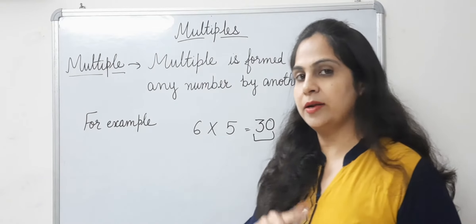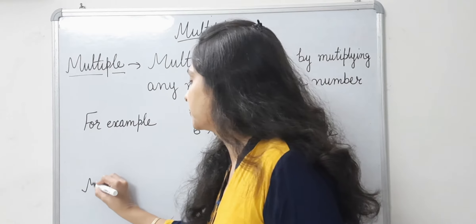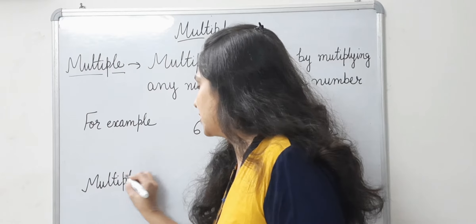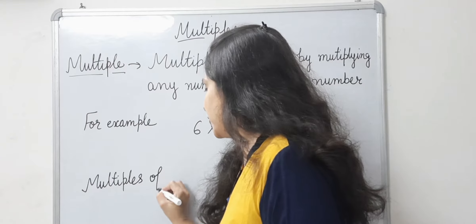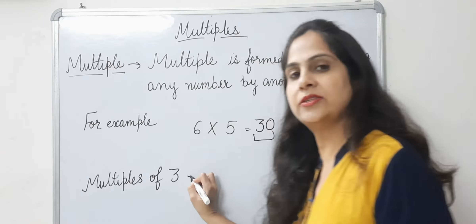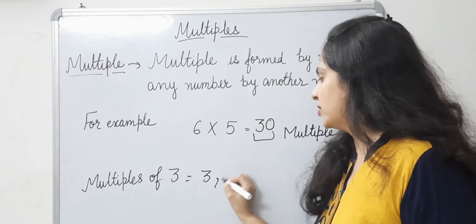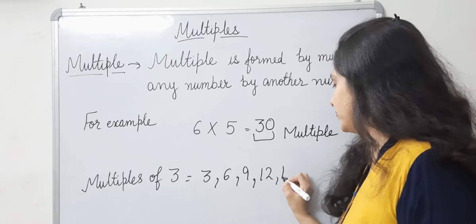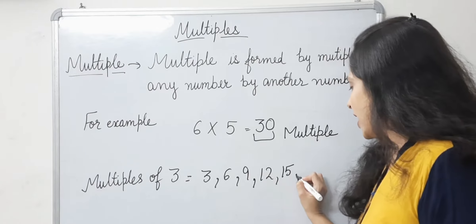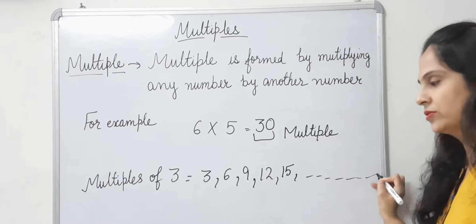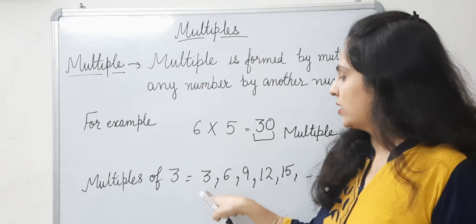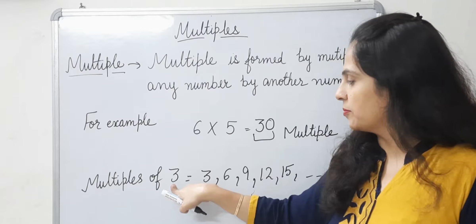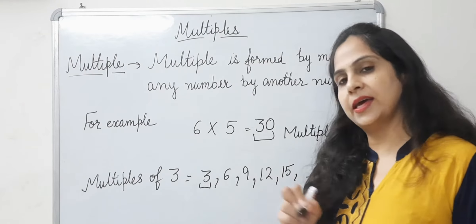Now let's write multiples of any number. Let's write multiples of 3: 3 1s are 3, 3 2s are 6, 3 3s are 9, 3 4s are 12, 3 5s are 15, and so on. The smallest multiple of any number is the number itself.